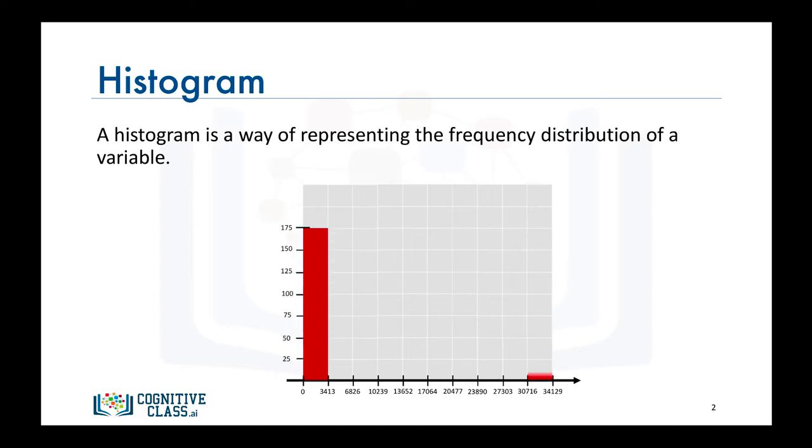Then we draw a bar of that height for this bin. We repeat the same thing for all the other bins, and if no data points fall into a bin, then that bin would have a bar of height zero.